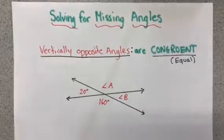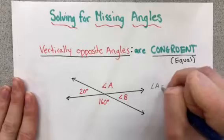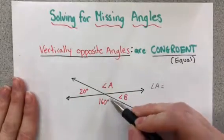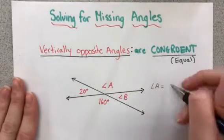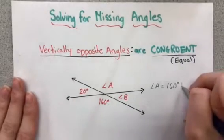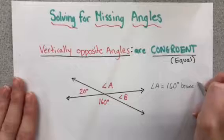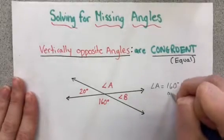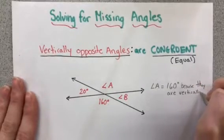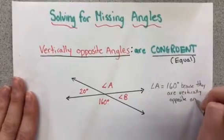Therefore, if I have to solve this problem where I need to solve angle A, if I know it's vertically opposite with 160, that means these two are equal. So angle A measures 160 degrees because they are vertically opposite angles.